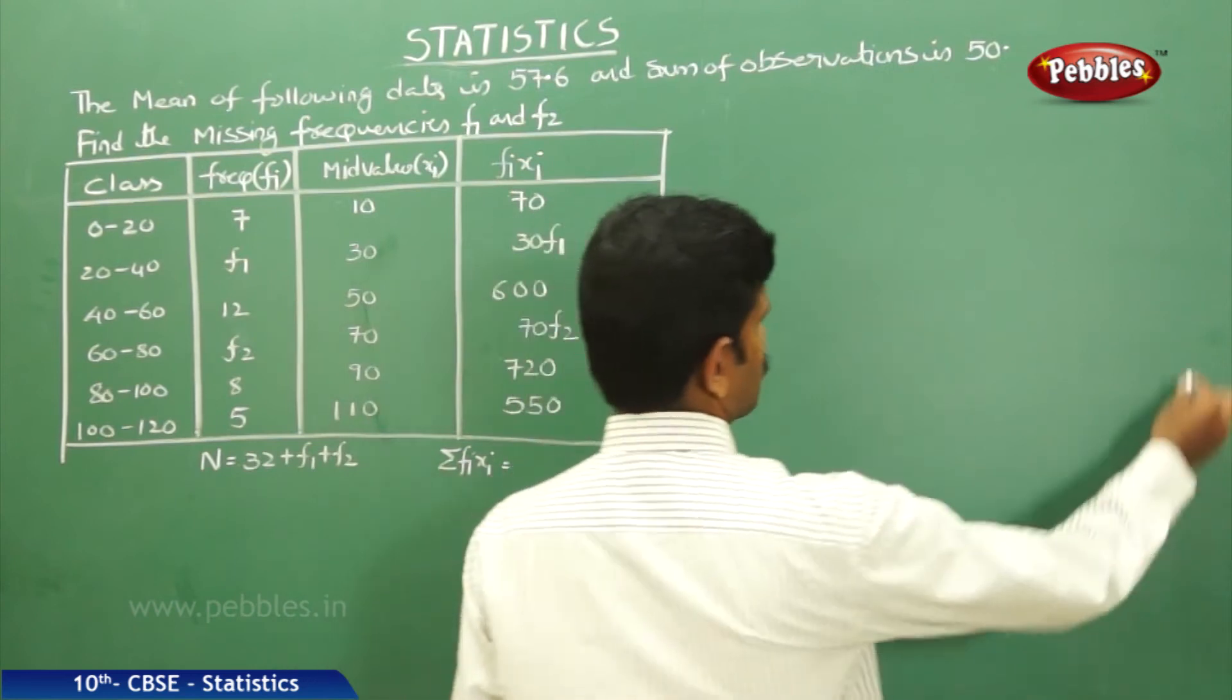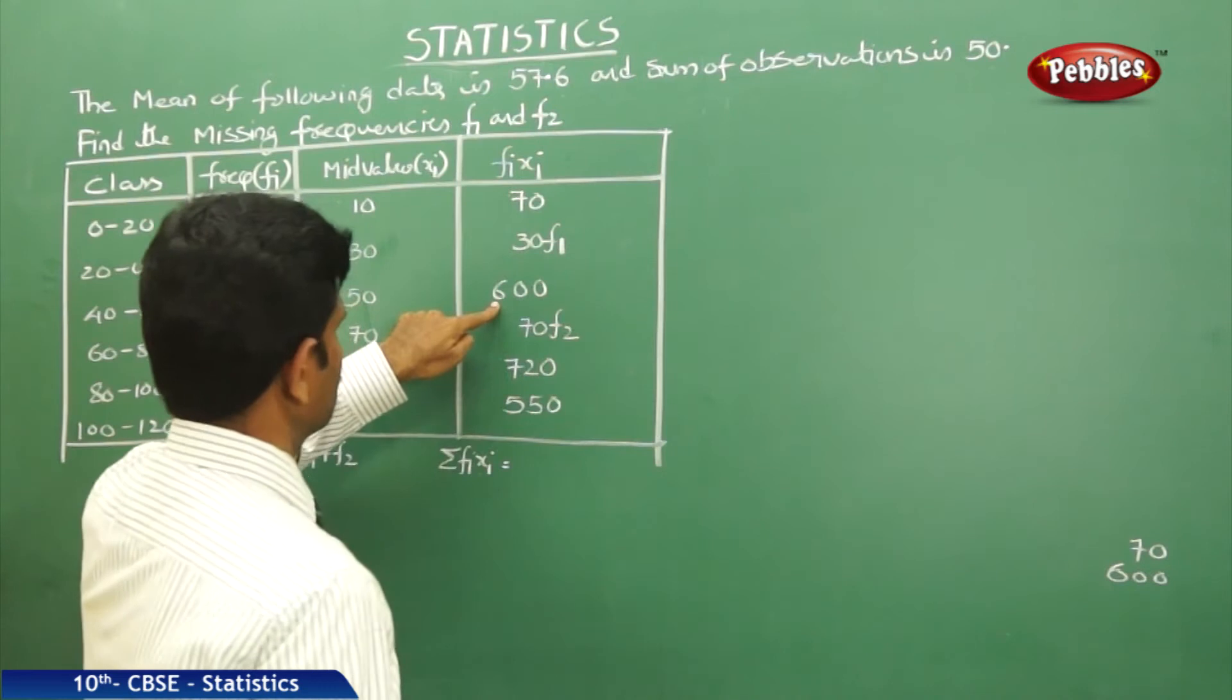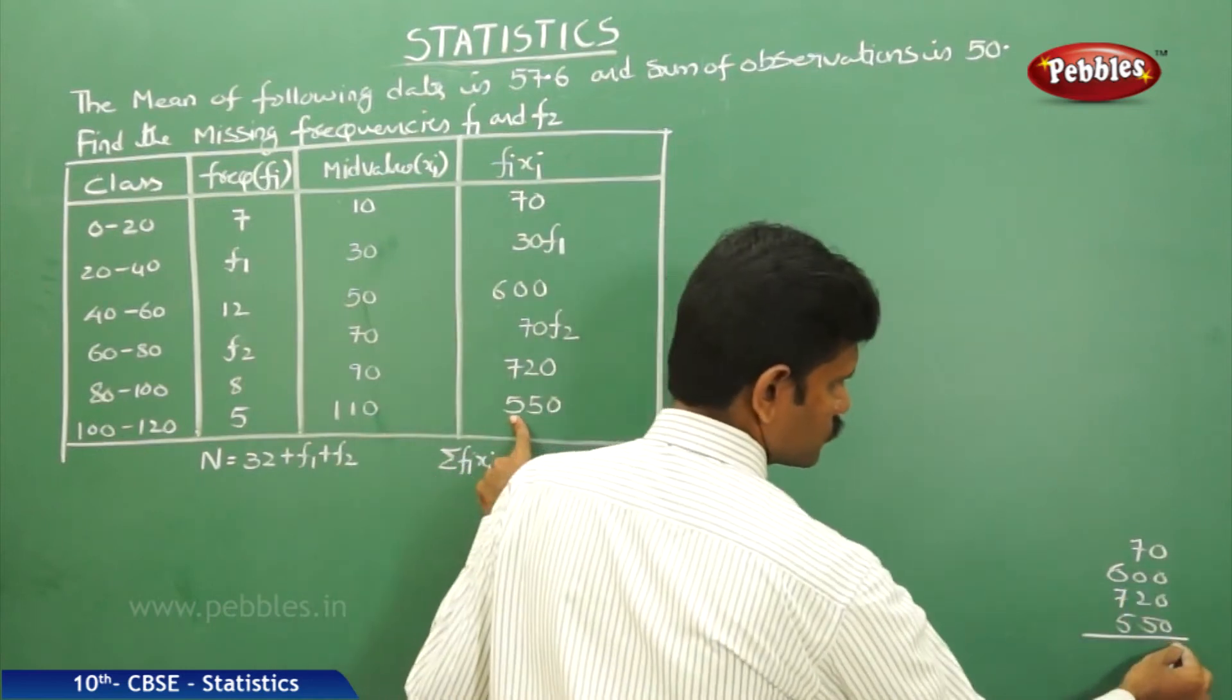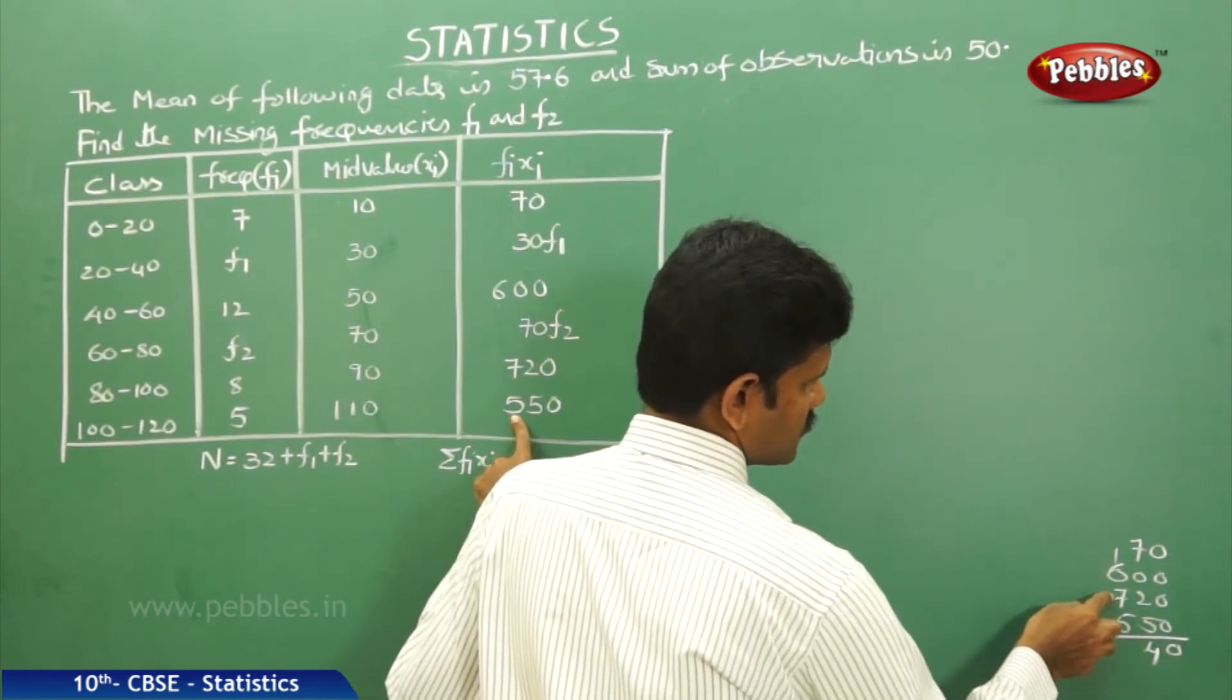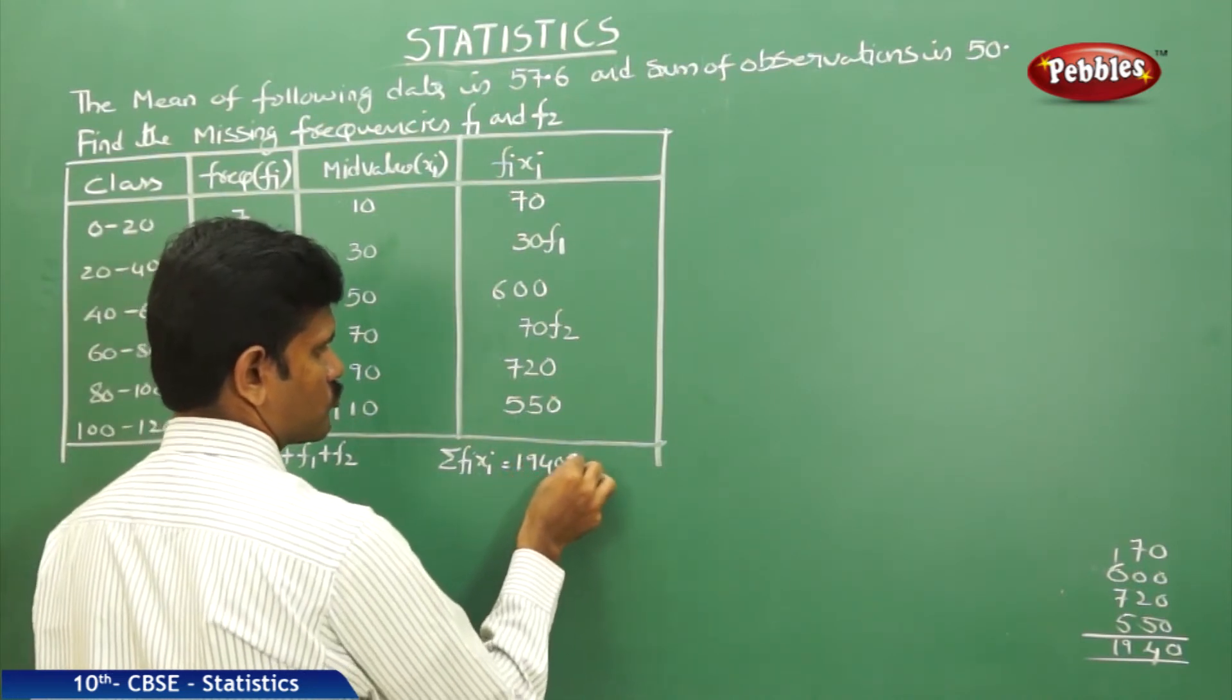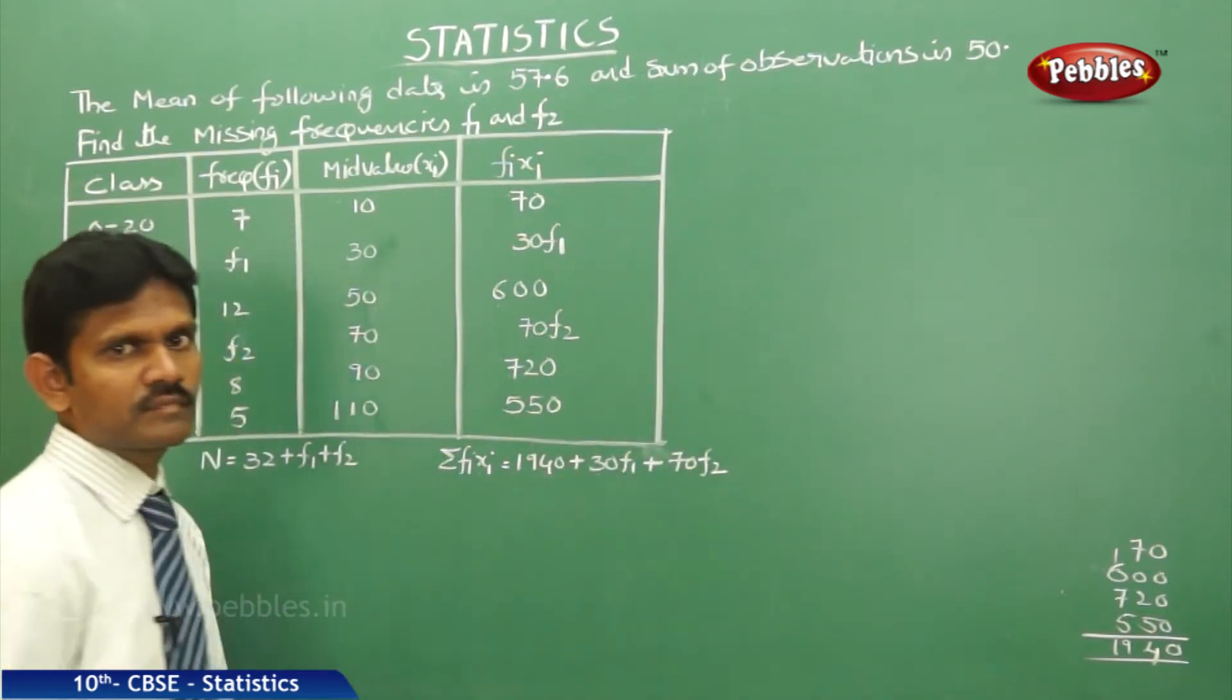32 plus F1 plus F2. Now, sigma Fi Xi. That means, accept these two values. Please go to the margin side and add: 70, 600, 720, 550. That is 0, 5 plus 2, 7. 7 plus 7, 14. 14 plus 5, 19. That is 1940 plus 30F1 plus 70F2.